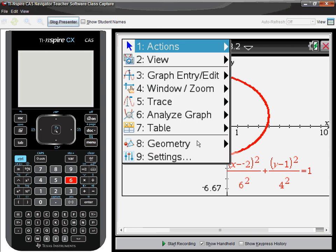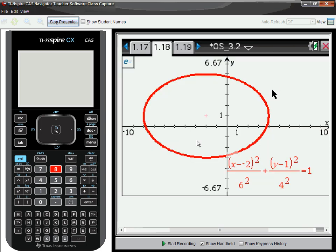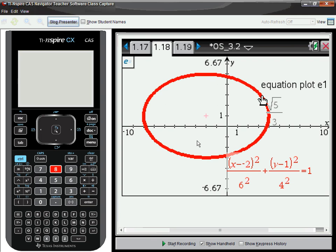What else could I find here? How about the eccentricity? And it's radical 5 over 3, ratio of C to A.